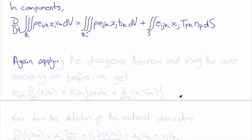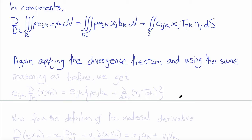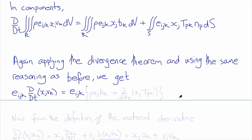Applying the divergence theorem to turn the surface integral into a volume integral, which gives us the divergence of the stress, and using the same reasoning as before so that the integrand itself must be satisfied, we obtain the permutation symbol e_ijk times the material derivative d/dt of x_j times v_k equals e_ijk times rho times x_j v_k plus del/del x_p of x_j times t_pk.